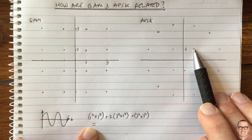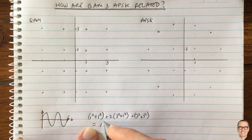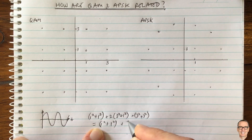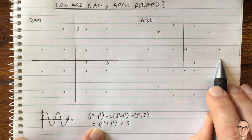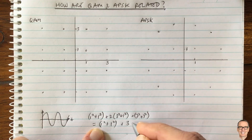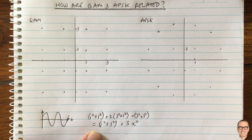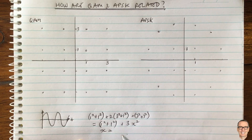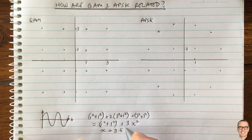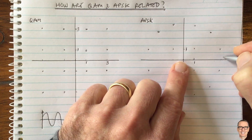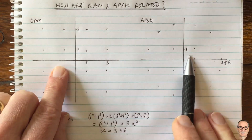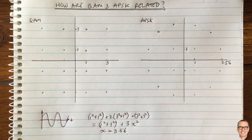For APSK, the power in one quadrant: there's the inner point at (1, 1), giving one squared plus one squared, and then three outer points each at radius x, contributing plus three times x squared. Setting these average powers equal, you can find that x equals 3.56. So if the outer circle radius is 3.56, we can relate the two different constellations to each other and compare performance.